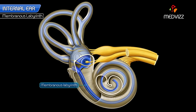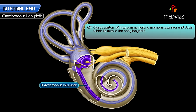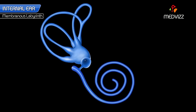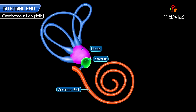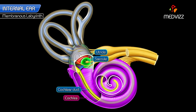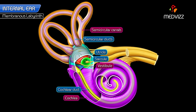The membranous labyrinth is a closed system of intercommunicating membranous sacs and ducts which lie within the bony labyrinth. It is filled with endolymph. It presents with a cochlear duct, saccule, utricle, and three semicircular ducts. The cochlear duct lies within the bony cochlea, the saccule and utricle lie within the bony vestibule, and the three semicircular ducts lie within the three bony semicircular canals.